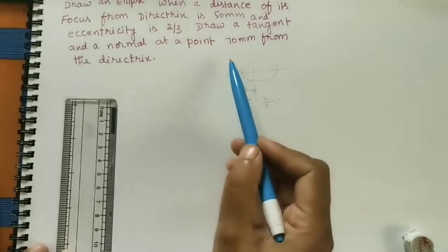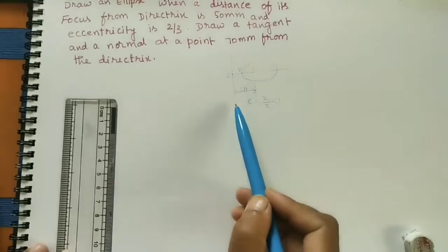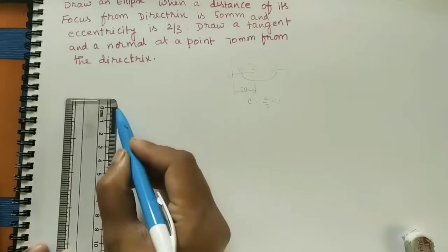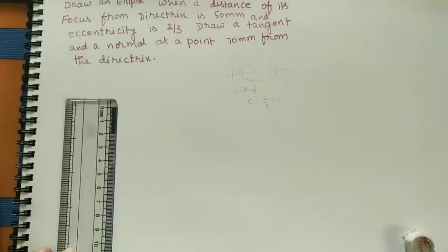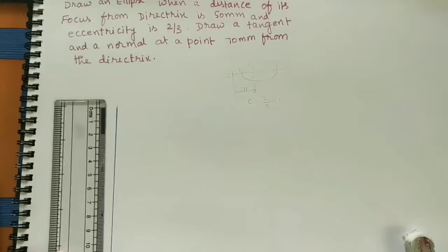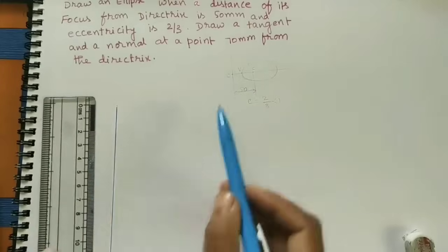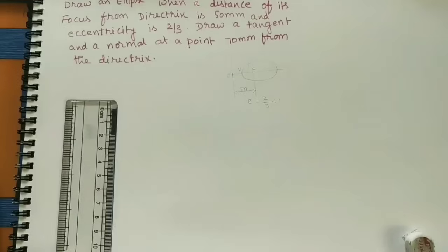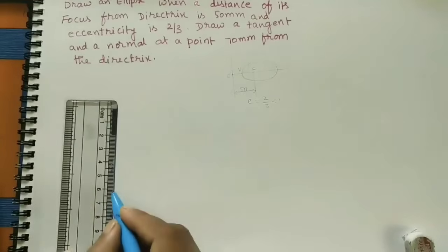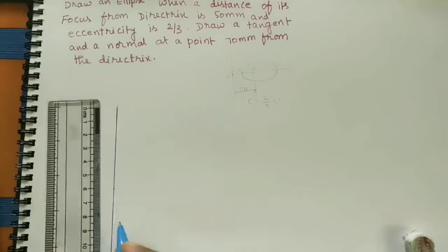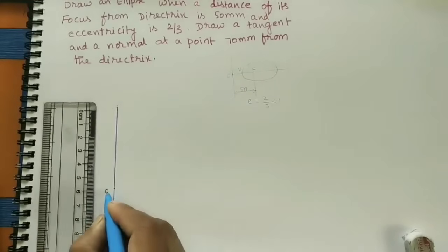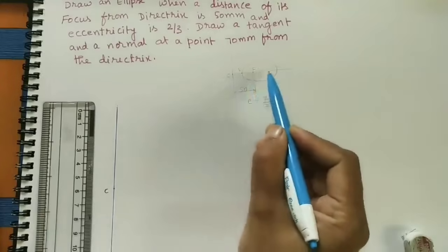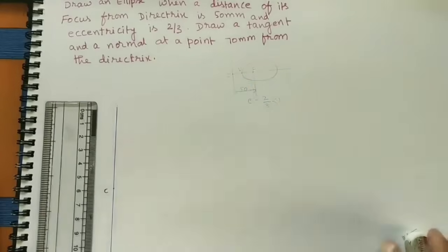For drawing the ellipse using the eccentricity method, first draw the directrix. We can take any length - here I am taking about 12 cm. This is the directrix. Mark the C point - we can take any point on the directrix; I am taking the middle point. This is the C point. At C, draw the axis line, which is 90 degrees to the directrix.